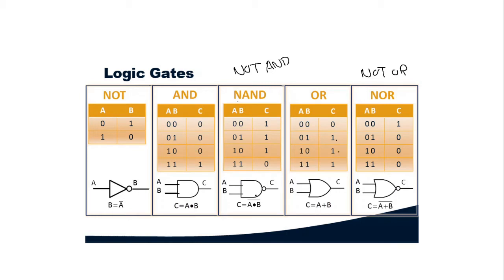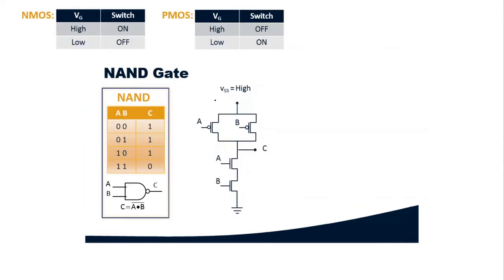All these gates can be constructed using CMOS technology. This is the circuit of the NAND gate using CMOS technology. We know the truth table of the NAND gate: C is the output, A and B are the inputs, and this is the symbol of the NAND gate.